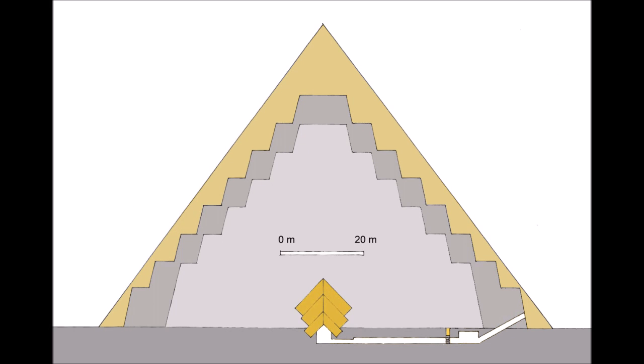The Pyramid of Neferirkare, in ancient Egyptian the Ba of Neferirkare, was built for the 5th dynasty pharaoh Neferirkare Kakai in the 25th century BC. It was the tallest structure located on the highest site at the necropolis of Abusir, found between Giza and Saqqara, and still towers over the necropolis today.